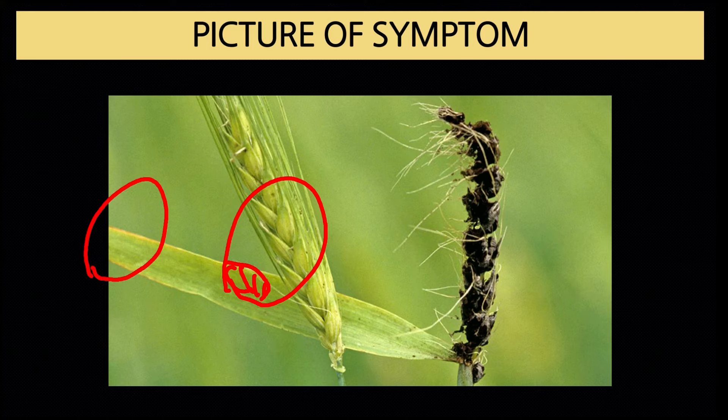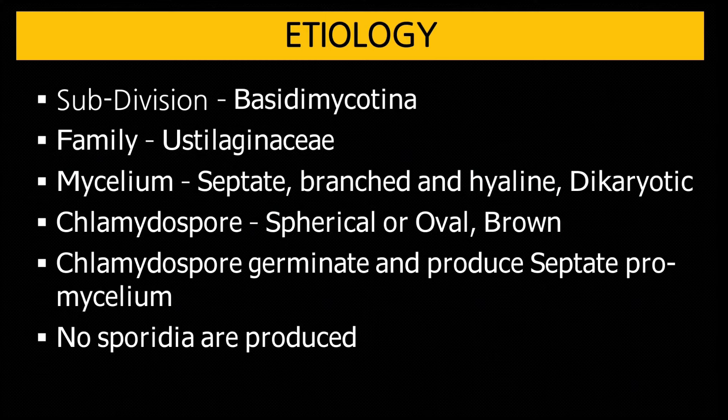Etiology of loose smut (Ustilago tritici): belongs to subdivision Basidiomycotina, family Ustilaginaceae. Mycelium is septate, branched, hyaline, and dikaryotic — two nuclei present per cell. The spore is called a chlamydospore (not teliospore), because unlike teliospores, these do not produce basidiospores after germination.